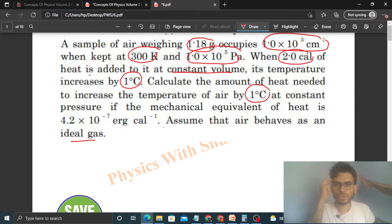Okay, so now we have an air sample and a lot of data given like mass that is 1.18 gram, volume that is 10 raised to the power 3 centimeter cube or you can say 10 raised to the power minus 3 meter cube. Now we have units of heat are values, temperature that is 300 Kelvin and pressure that is 10 raised to the power 5 Pascal.